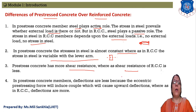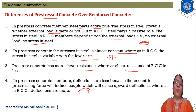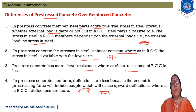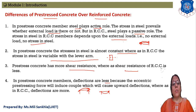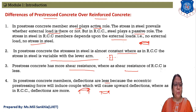Prestressed concrete member deflection is less compared to RCC. In prestressed concrete, the deflection is upward (camber), whereas in RCC it is downward. Because upward deflection is lesser in magnitude compared to downward deflection, the net deflection is reduced. The eccentric prestressing force produces a couple that counterbalances the deflection, and ultimately the deflection of prestressed concrete is lesser than RCC members.